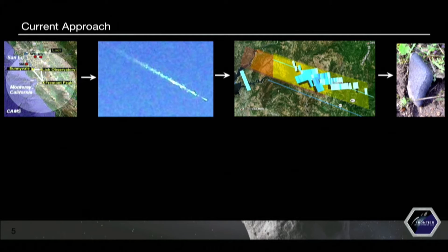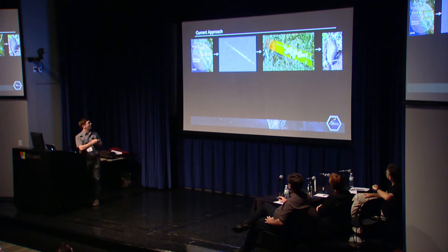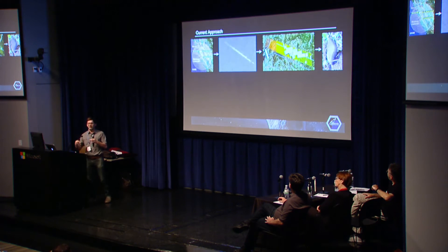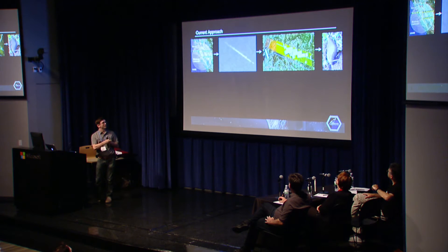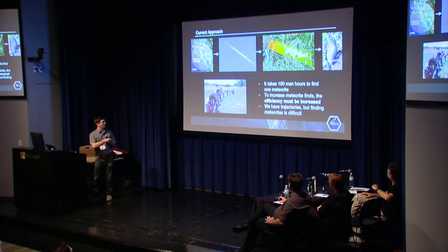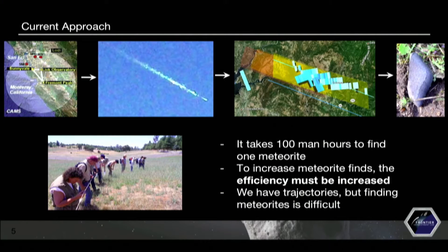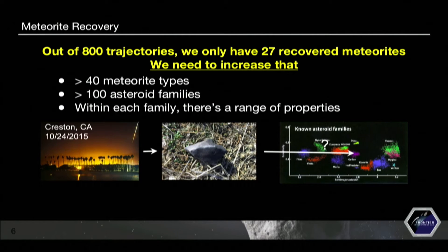The current approach is to develop a network of cameras — that's what Peter has set up — and then take images of actual trajectories. Based on the trajectory, if you image the actual entry of a meteor into the atmosphere, you'll have an estimate of what the strewn field would look like, and then you can go find the physical sample. The current approach to finding them is boots on the ground, searching for the meteorite. But it can take a hundred man hours to find just one. Out of 800 trajectories we have, we've only recovered 27 meteorites.